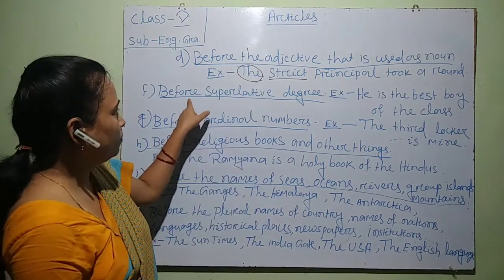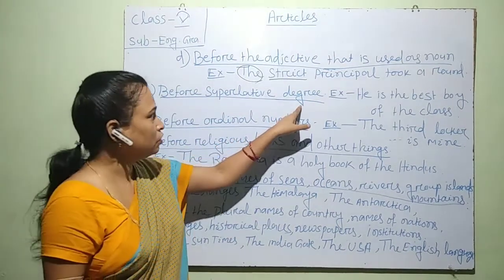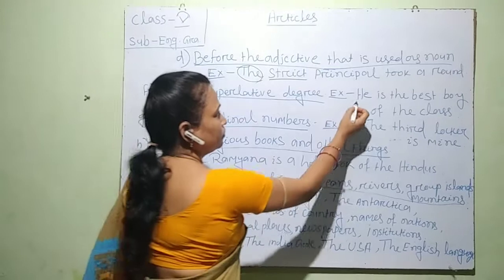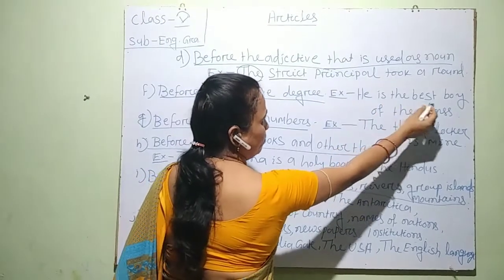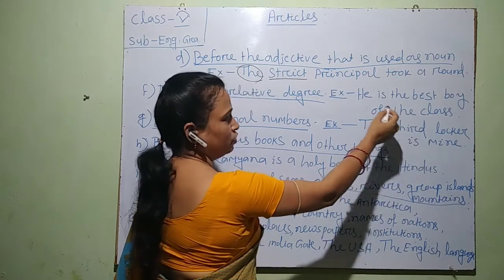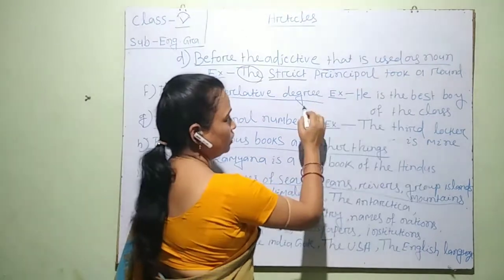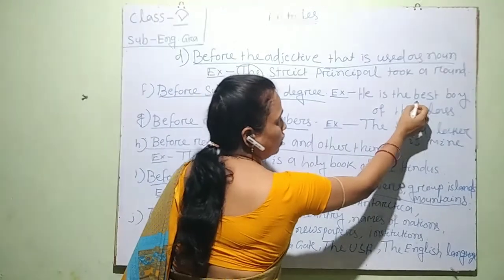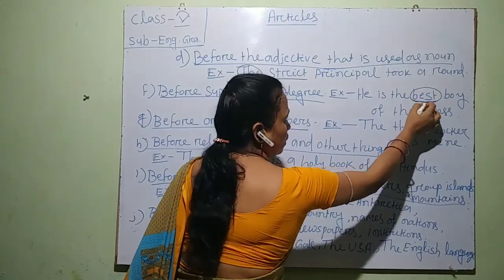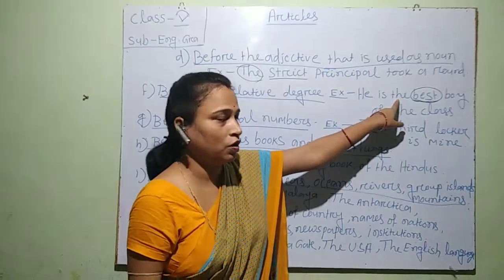We use 'the' before the superlative degree. All of you know what a superlative is. For example: 'He is the best boy of the class.' Children, which word is the superlative word? 'Best' is the superlative word. So here I use 'the'.